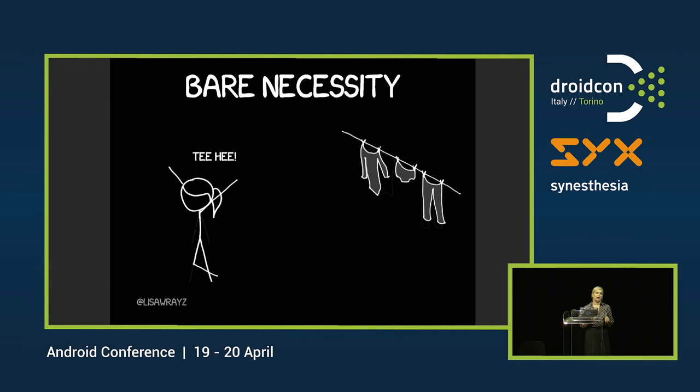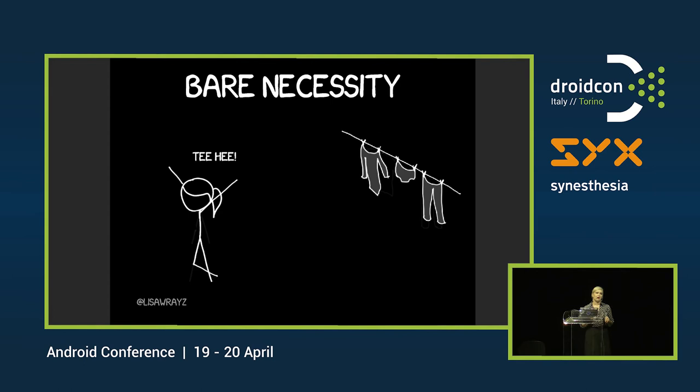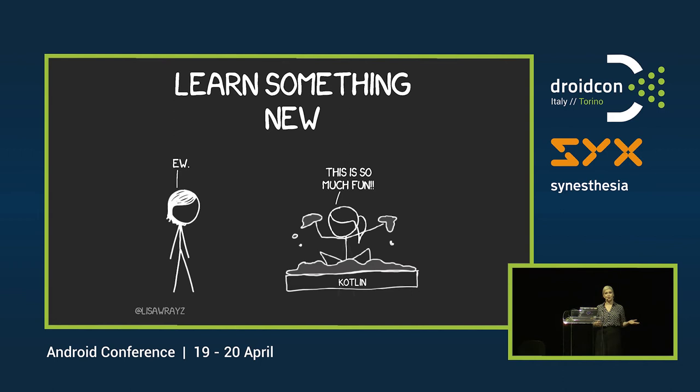Another reason to make a library can be to learn something new. You don't always want to do this on the job — sometimes your job doesn't want you to either. So you want to learn Kotlin, you want to try out animations — a library can be a really good place to sandbox your learning, because learning can sometimes be a messy process and you don't want to get your learning all over your code base.